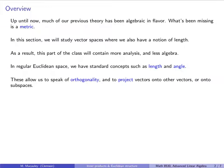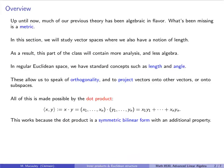For example, we can speak of notions such as orthogonality, which is just a fancy word for something that's perpendicular. And using this, we can project vectors onto other vectors or onto subspaces. All of this — length, angle, orthogonality, projection — is made possible by the dot product, something that we all know and love.